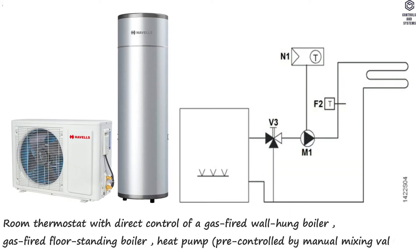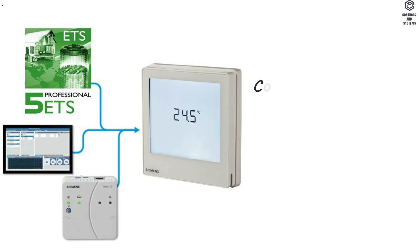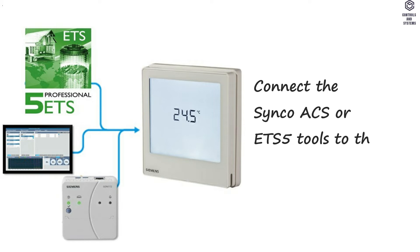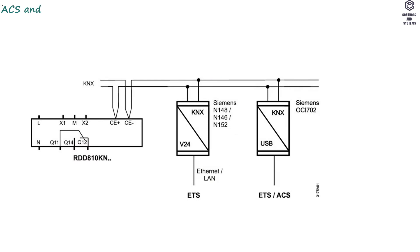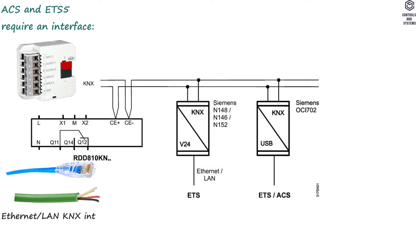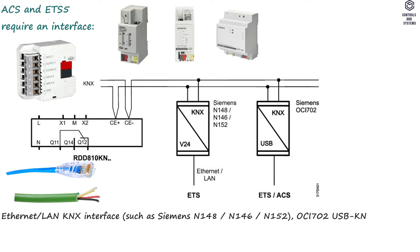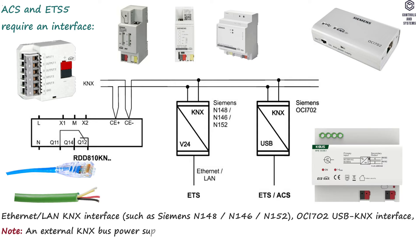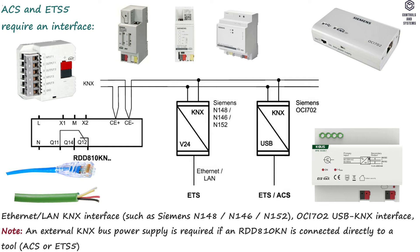Pre-controlled by manual mixing valve. Connect Tool: connect the Sync Away CS or ETS 5 tools to the KNX bus cable at any point for commissioning. ACS and ETS 5 require an interface — Ethernet LAN KNX interface such as Siemens N148, N146, N152, or OTSA 702 USB KNX interface. Note: an external KNX bus power supply is required if an RDD810KN is connected directly to a tool (ACS or ETS 5) via KNX interface.